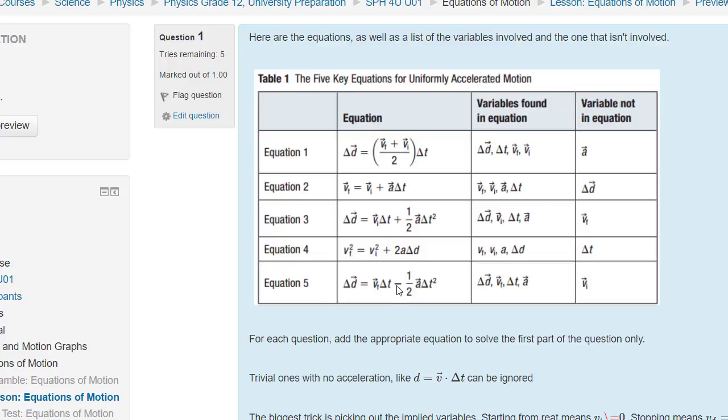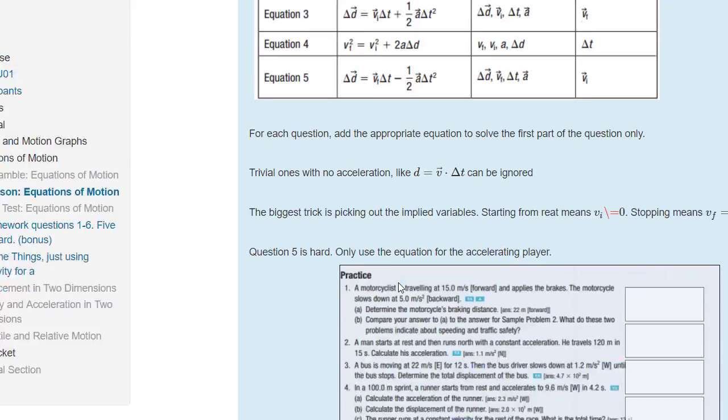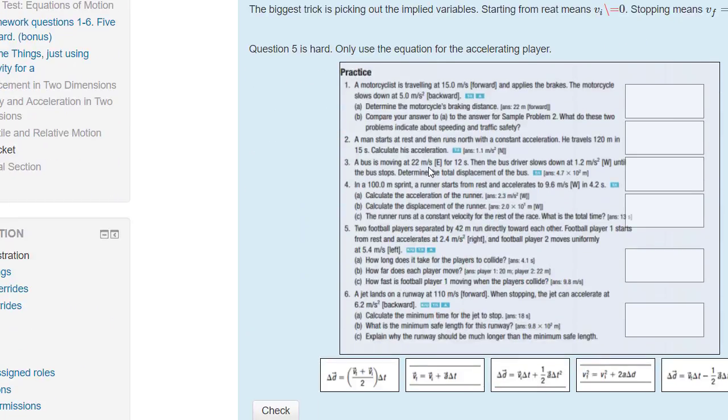Now there are a few tricky things when they ask you these questions. So a motorcyclist is traveling at 15 meters per second forward—good, there's vi or v1—and applies the brakes. The motorcycle slows down at five meters per second squared backwards, and so you've got to take into account positive and negative.